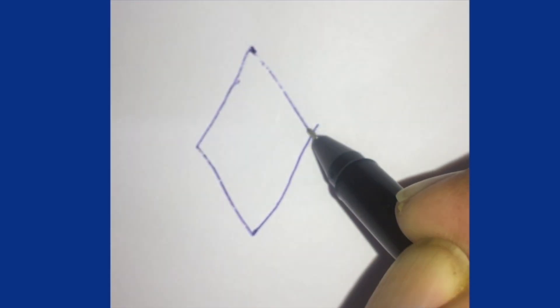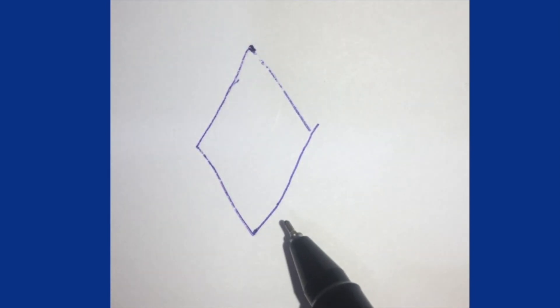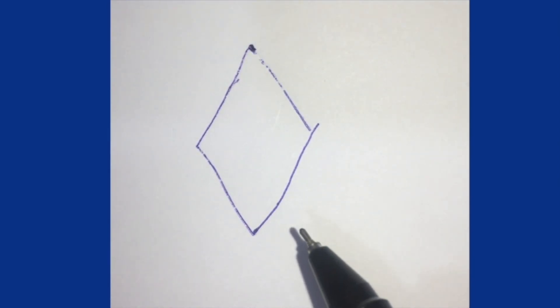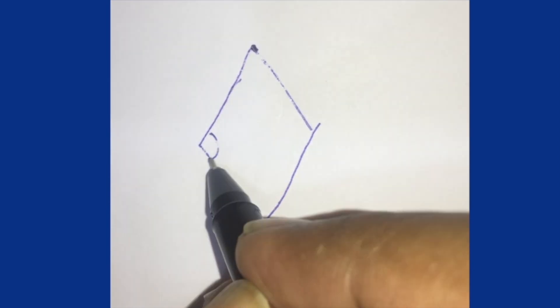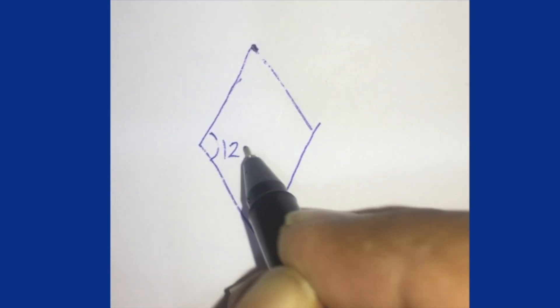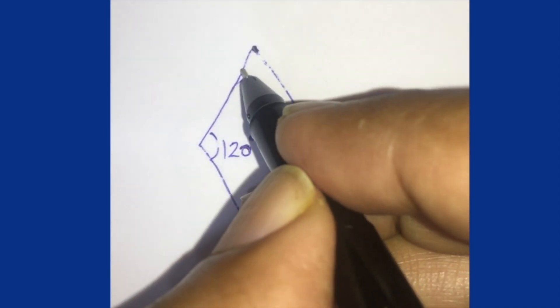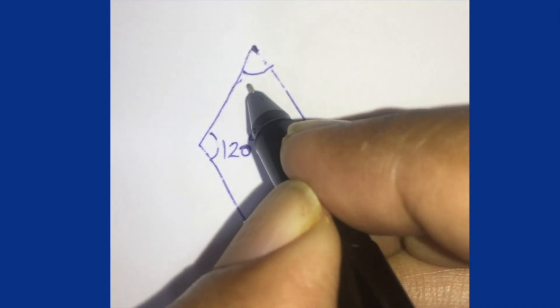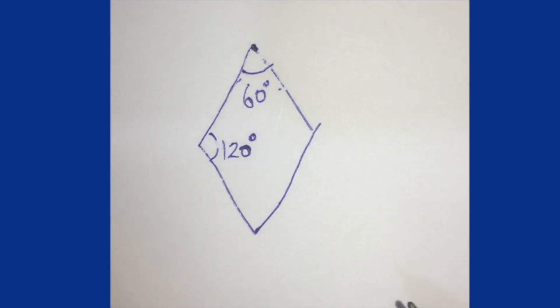The classic rhomboid flap is otherwise known as the Limburg flap, which was described in 1963 by Alexander Alexandrovich Limburg. Characteristically, the angles are 120 degrees and 60 degrees.